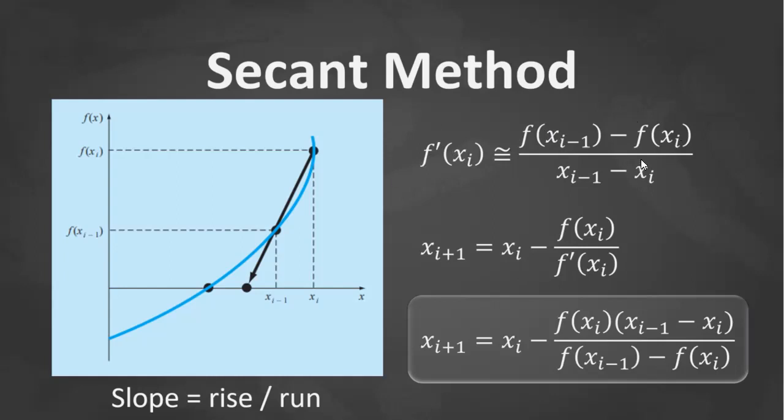So if we substitute this as a denominator, the result is this. So this becomes the formula to use if you are to use the Secant method.